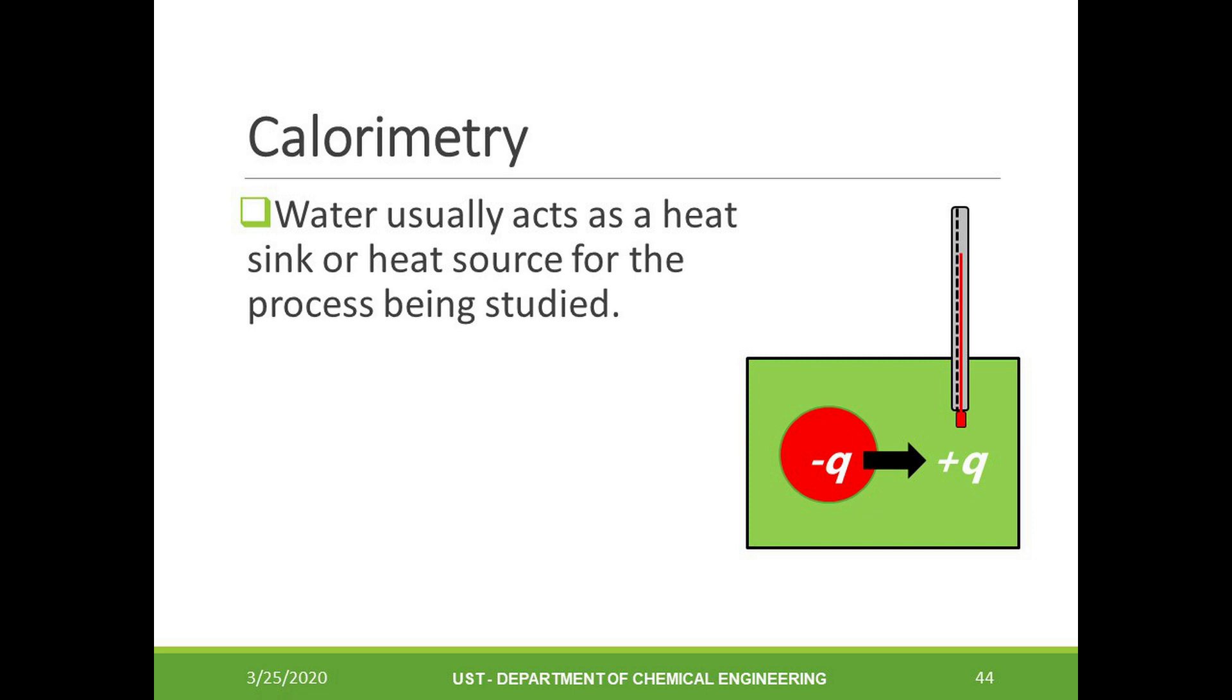When we use calorimeters, typically we use water as a common heat sink or a heat source for the reaction being studied. If water is being used, it will absorb all heat if the process being studied releases heat, or water will become a heat source if the process being studied needs to absorb heat.